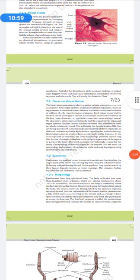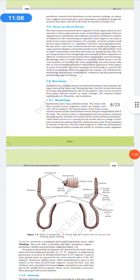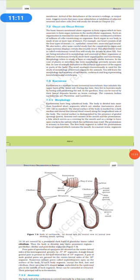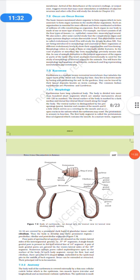Now we are coming to the various. So these tissues are going to form the organs and these organs are going to form the organ system. So let us look at one by one the organisms. So first looking to earthworm. Earthworm, it is reddish brown terrestrial invertebrate that inhabits the upper layer of the moist soil during the daytime. They will burrow, made by boring and swallowing the soil. In the gardens, they are traced by their fecal deposits known as worm castings. The common Indian earthworms are Pheretima and Lumbricus.